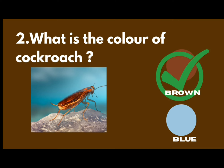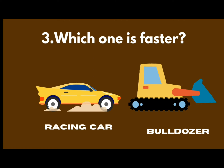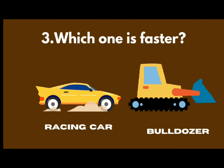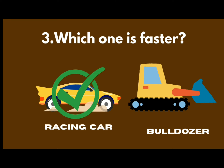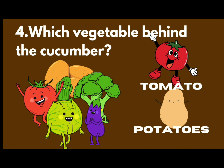The color is brown, your answer is correct. Okay, so which one is faster — racing car or bulldozer? Which one is faster? What is the name of this car — racing car?